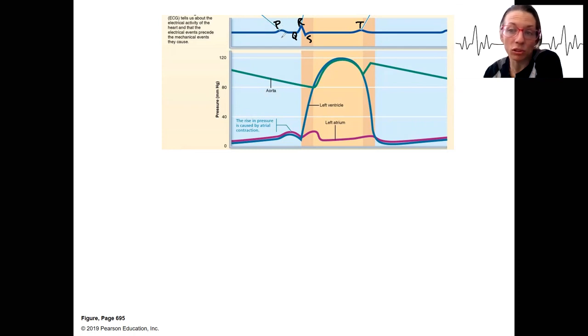So the P wave is atrial depolarization. It's going to cause atrial contraction, and that's going to cause an increase in pressure in the atria.